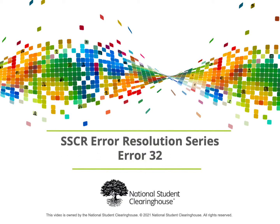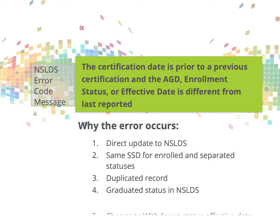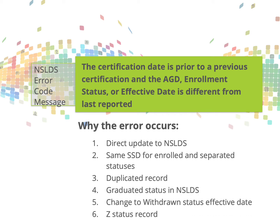Welcome to the tutorial on SSCR Error Code 32. Per the NSLDS, SSCR Error Code 32 is caused by a certification date on the record that is prior to a previous certification, and the anticipated graduation date, enrollment status, or status effective date is different from what was last reported. Error Code 32 occurs due to several reasons which will be covered in depth in this tutorial.